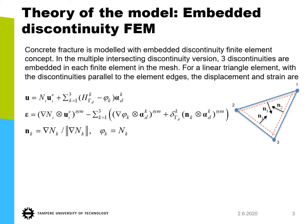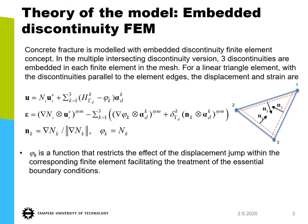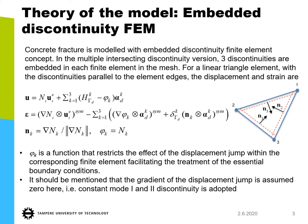The crack normals, when we have a 3-node triangle and cracks parallel to element edges, are the normalized gradients of the displacement interpolation functions. We then have ramp functions shown as the corresponding nodal functions. The purpose of function φ is that it restricts the effect of the displacement jump within the corresponding finite element, thus facilitating the treatment of the essential boundary conditions. It should also be mentioned that the gradient of the displacement jump is assumed zero — this is the constant mode-one and mode-two approach, because the strain for a linear triangle is constant. It is logical to assume that the displacement jump term is also constant element-wise.